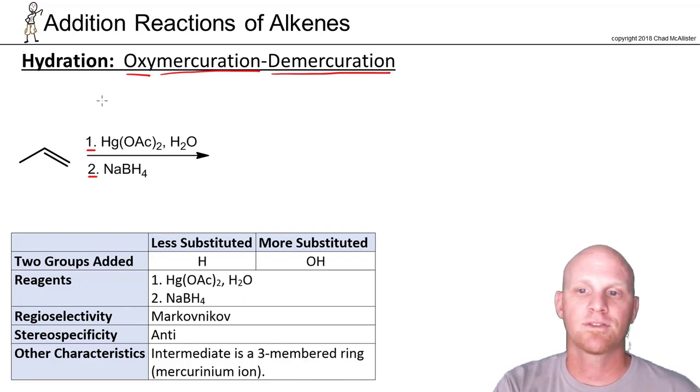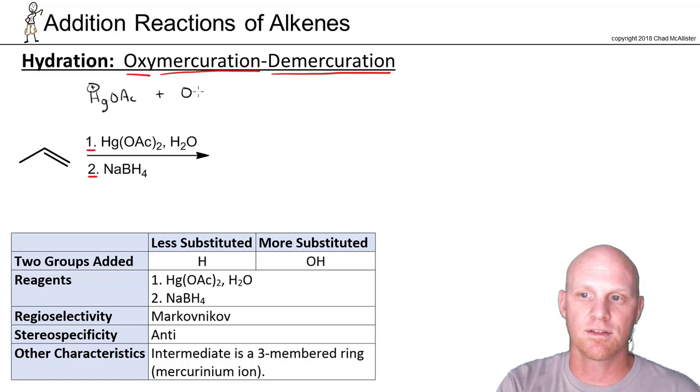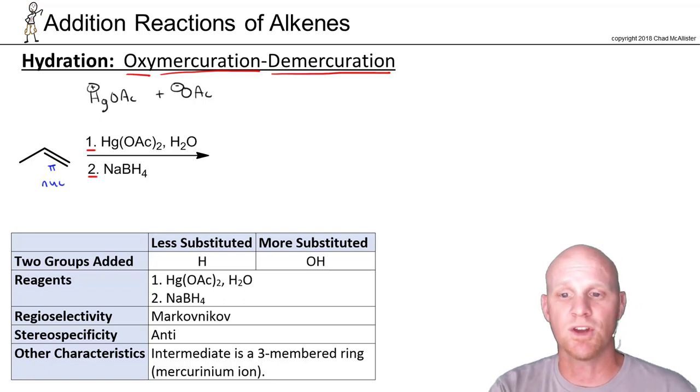Now it turns out our mercuric acetate is going to dissociate to some extent. So we're going to get this cation and this anion. The anion we don't really care about, but the cation will become relevant here in a second. We talked about that our alkene's pi electrons are going to be the nucleophile in the first step of every one of the mechanisms we know. So we'll start there.